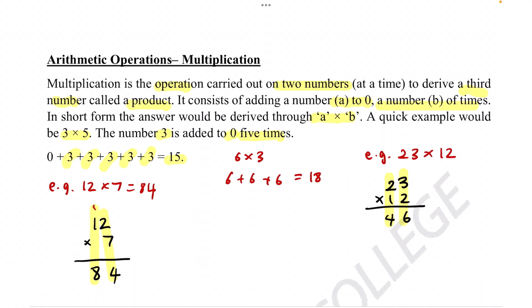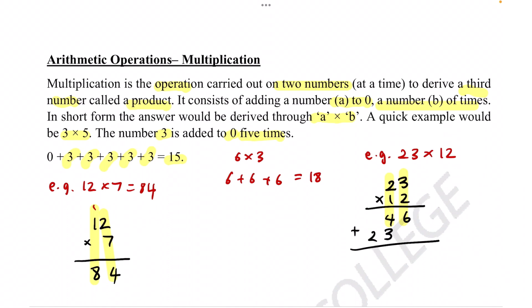Now this is where it gets tricky. We also have to multiply across with the 1. Since 1 is in the tens, we structure it in the tens column — we skip the ones place, and start with 1 times 3 is 3, then 1 times 2 is 2. Finally, for the last step, we add these numbers together: 6 plus 0 is 6, 4 plus 3 is 7, and 2 plus 0 is 2. So the answer is 276.